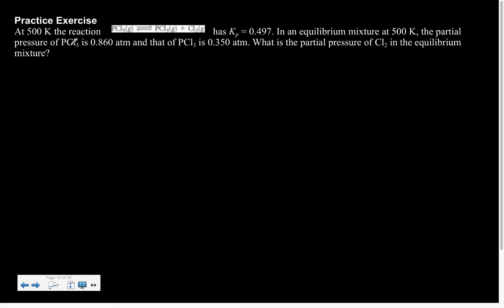Next up. Here it says that at 500 degrees, the reaction blah has a Kp of this. In an equilibrium mixture, the partial pressures of PCl5 and PCl3 are those. What is the partial pressure of CO2? So what are we really doing here? We already have our K value. We have two of my pieces of information. We're solving for X.